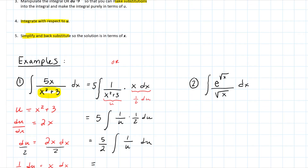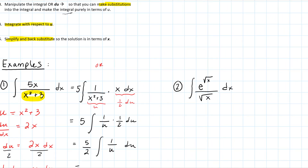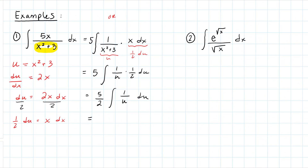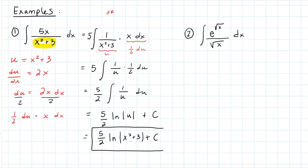Pulling the ½ to the front, I've got 5/2 times the integral of 1/u du. Now I can integrate because the integral is purely in terms of u and it's a basic integral. The integral of 1/u is the natural log of the absolute value of u, so this becomes 5/2 times ln|u| + C. The last step is to back-substitute: this is 5/2 ln(x²+3) + C.